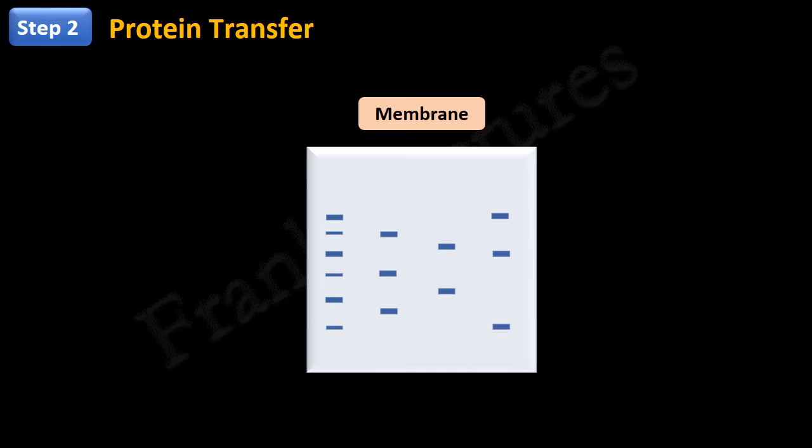The third step is known as blocking. Now as we said, the membranes have a very high affinity for proteins. Our next step will be the addition of antibody to find out the presence of target protein. But antibodies are also proteins. That means, they can bind to empty spaces on the membrane, where no protein bands are present.